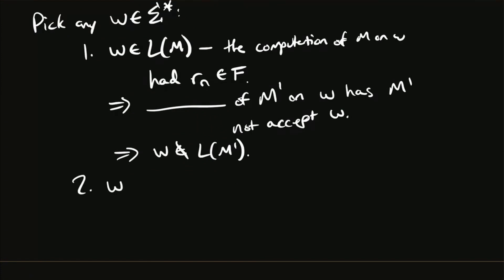Well, the other case is that W is not accepted by M, the original machine. Well, what does M prime do now? It has to accept it. What did M do, the original machine do? It landed in a non-final state by definition because it's not in the language. Well, since we didn't change the machine other than the final states, what did M prime do? It landed in a final state. So by similar reasoning, we have that W is in the language of M prime.